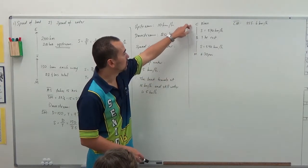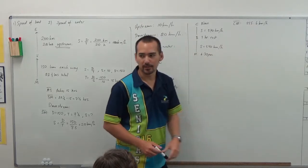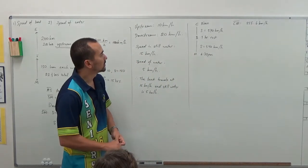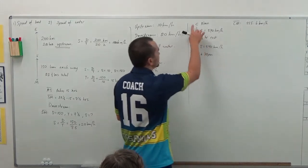Then they tell us that the overall journey was a speed of 555.6 km an hour. So the first thing that we can work out is the time from Cairns to Melbourne.